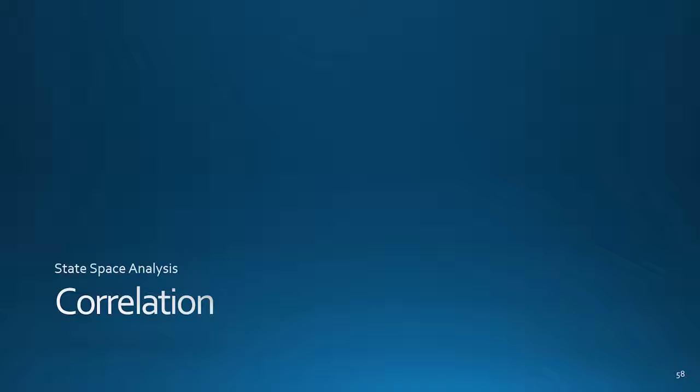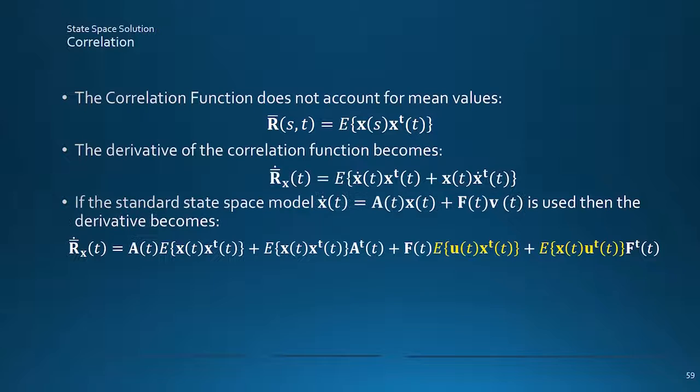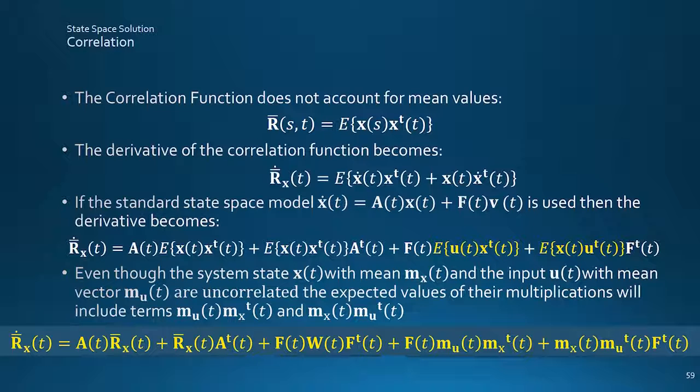The correlation function is the last piece to consider here for completeness. Its definition is simpler than for covariance in that it doesn't account for the mean values of the system or input signals. Differentiating gives this result, into which we can substitute the system equation, for convenience here using the standard rather than the differential version to give the final result. Substituting the correlation back into the right-hand side along with the mean values and a bit of fiddling gives this result. The first two terms are obtained directly. The third term is the fiddle. It accounts for the effect of the input and matches the result obtained above for the covariance function, requiring the workaround for the integration of white noise, which we achieved using the Wiener process.